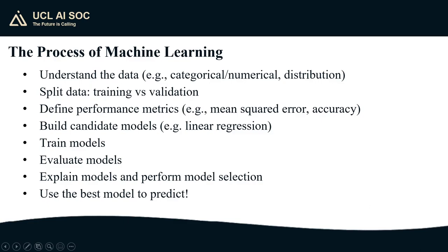Once I define my performance metrics, I'm going to start building candidate models. This means choosing one or several of the models that I know and training them on the training data, evaluating them on the validation data, and then trying to explain the models and perform model selection. That is, choose which of the models that I've trained I think works best.